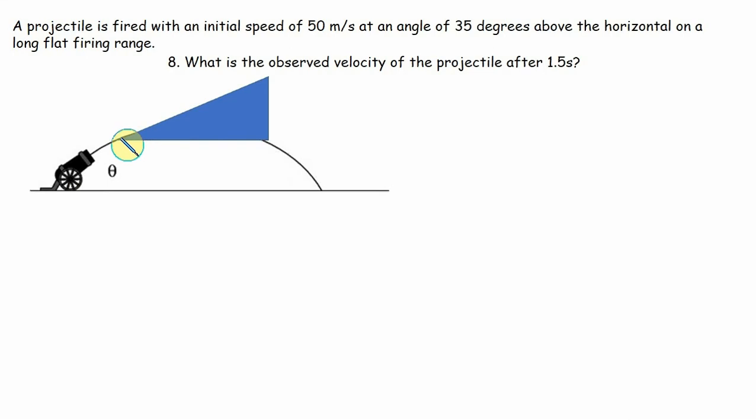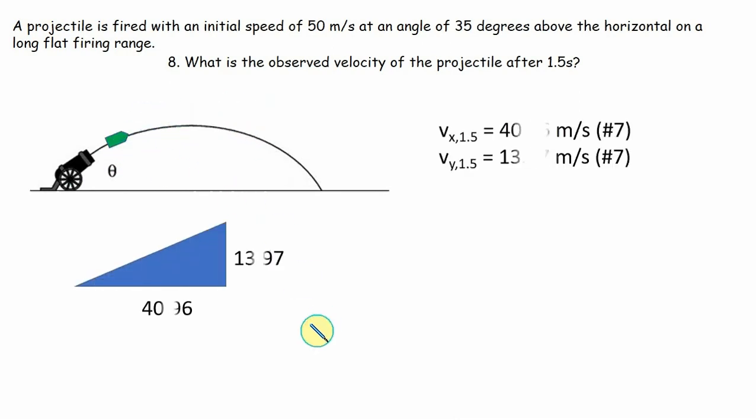Well, at that particular point, it's got X and Y components here. I'm going to get rid of this right here and I'm going to redraw it. So there's my projectile and there's my triangle. So let's get rid of that and let's put it down here. So from the previous problem, number seven, I know at 1.5 seconds, it's going 40.96 in the X and it's going 13.97 in the Y. What is this overall speed right here? Vector problem. Easy. I know the legs of the triangle. I need to solve for the hypotenuse. That's Pythagorean theorem.